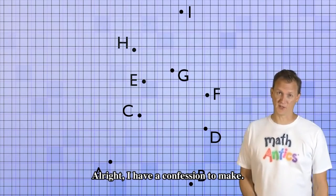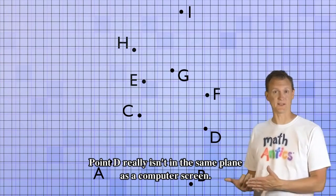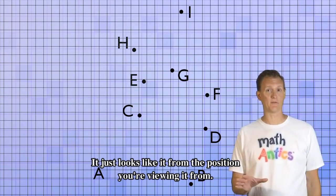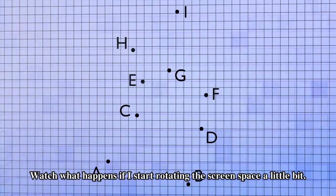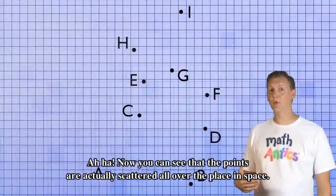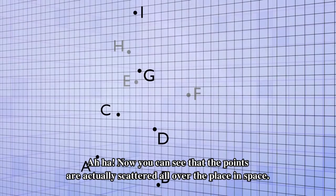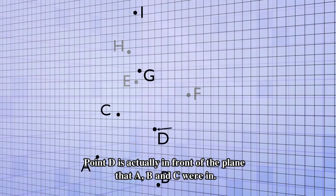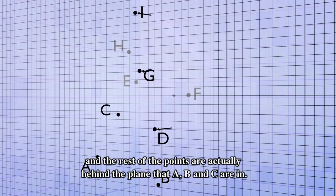Alright, I have a confession to make. I tricked you. Point D really isn't in the same plane as the computer screen. It just looks like it from the position you're viewing it from. Watch what happens if I start rotating the screen space a little bit. Aha! Now you can see that the points are actually scattered all over the place in space. Point D is actually in front of the plane that A, B, and C were in, along with some of the other points, and the rest of the points are actually behind the plane that A, B, and C are in.